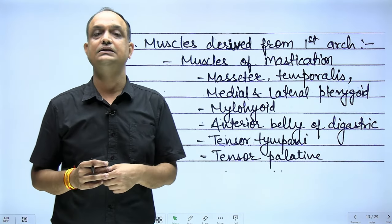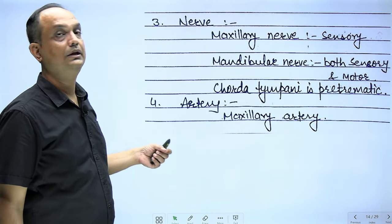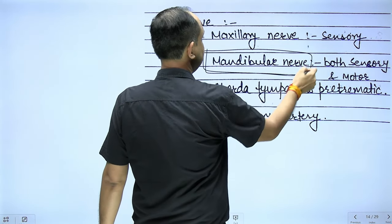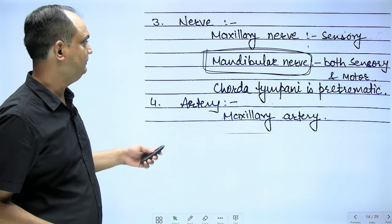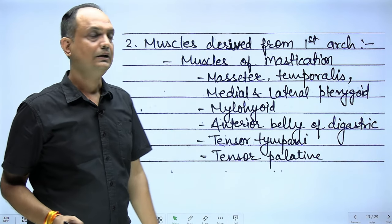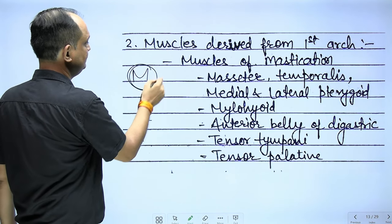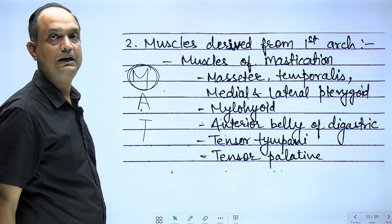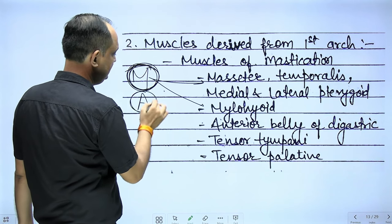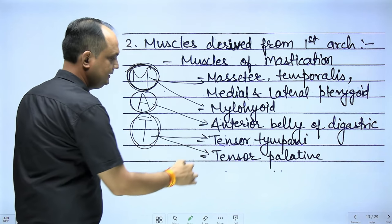The muscles of the first arch are all supplied by the mandibular nerve, remembered as MAT: muscles of mastication (masseter, temporalis, medial and lateral pterygoid), mylohyoid, anterior belly of digastric, tensor veli palatini, and tensor tympani.